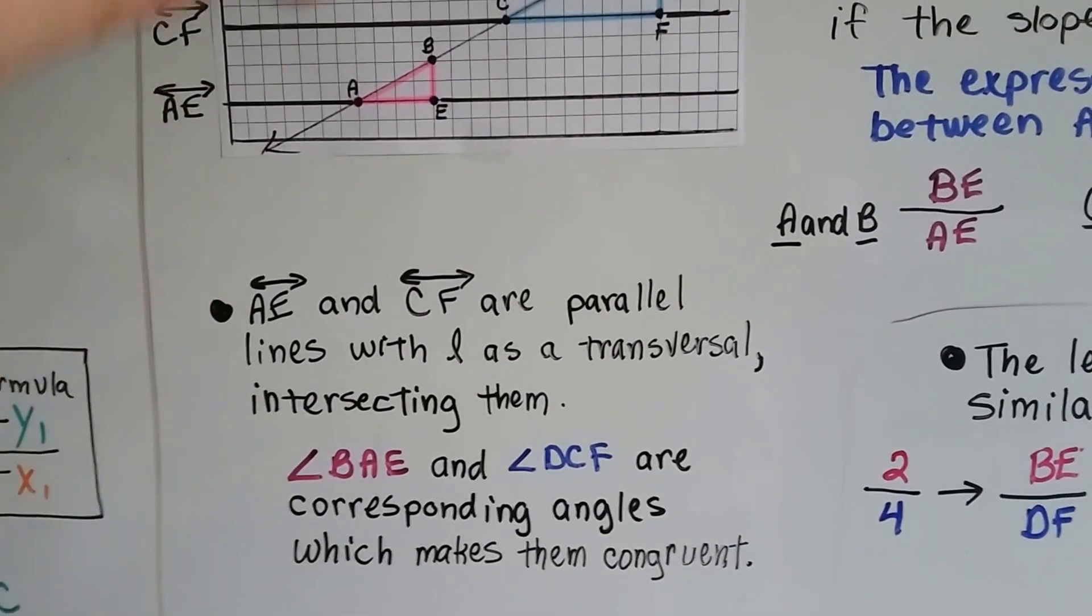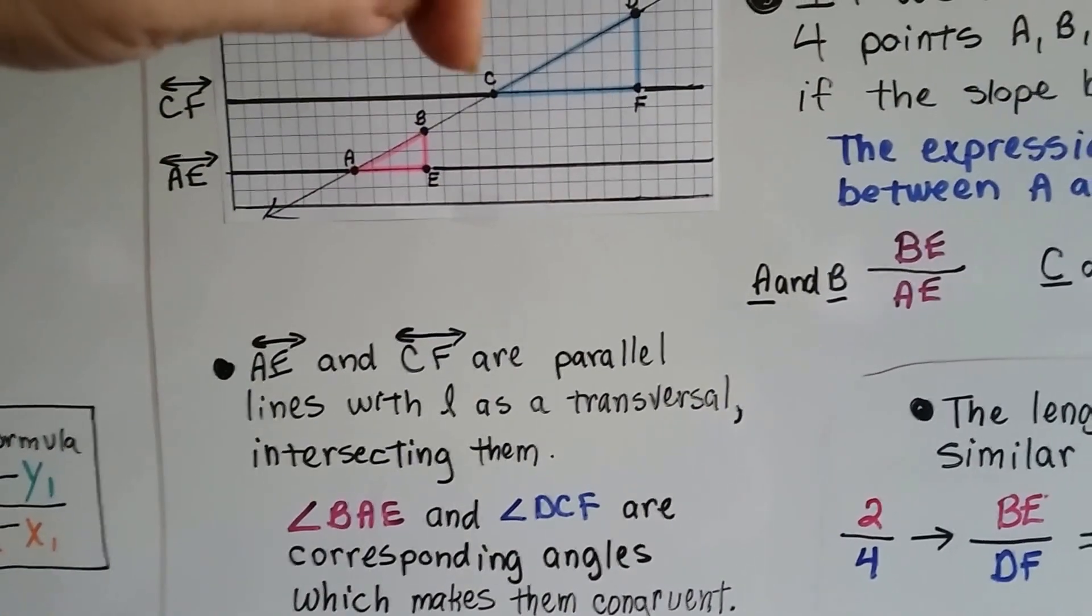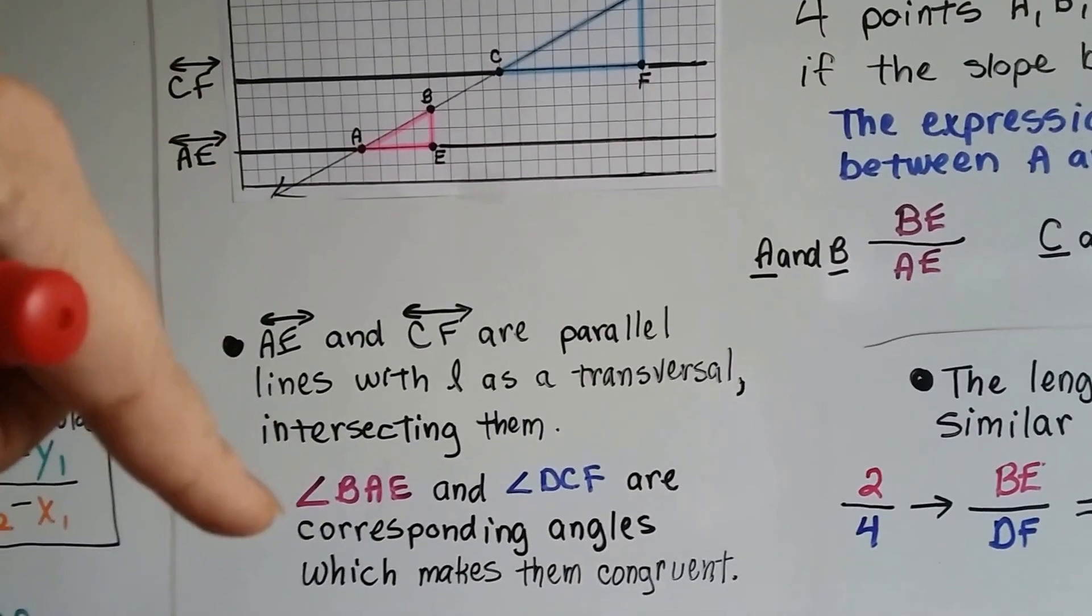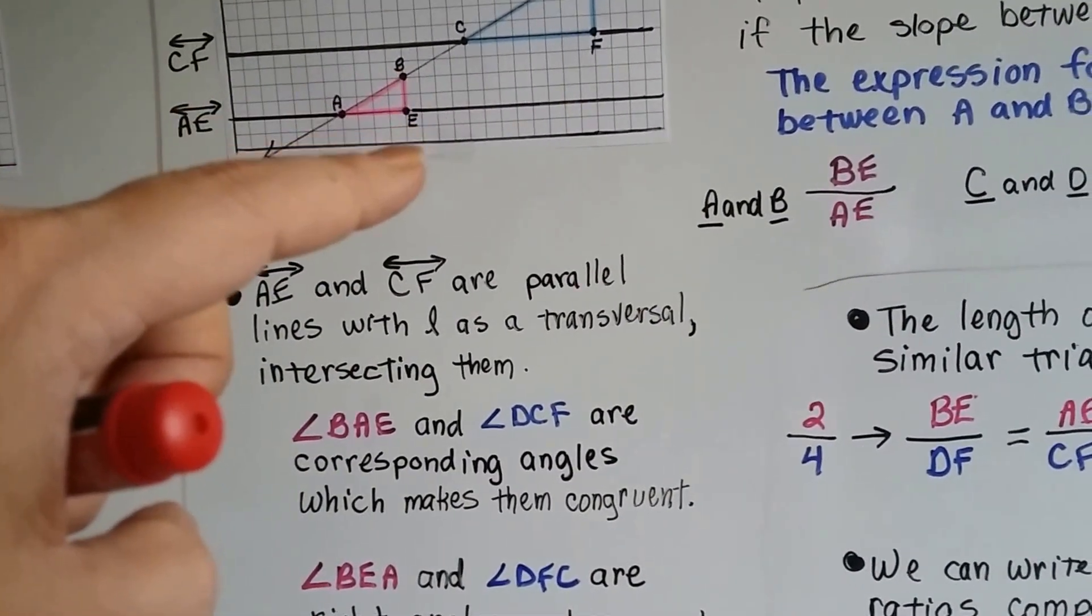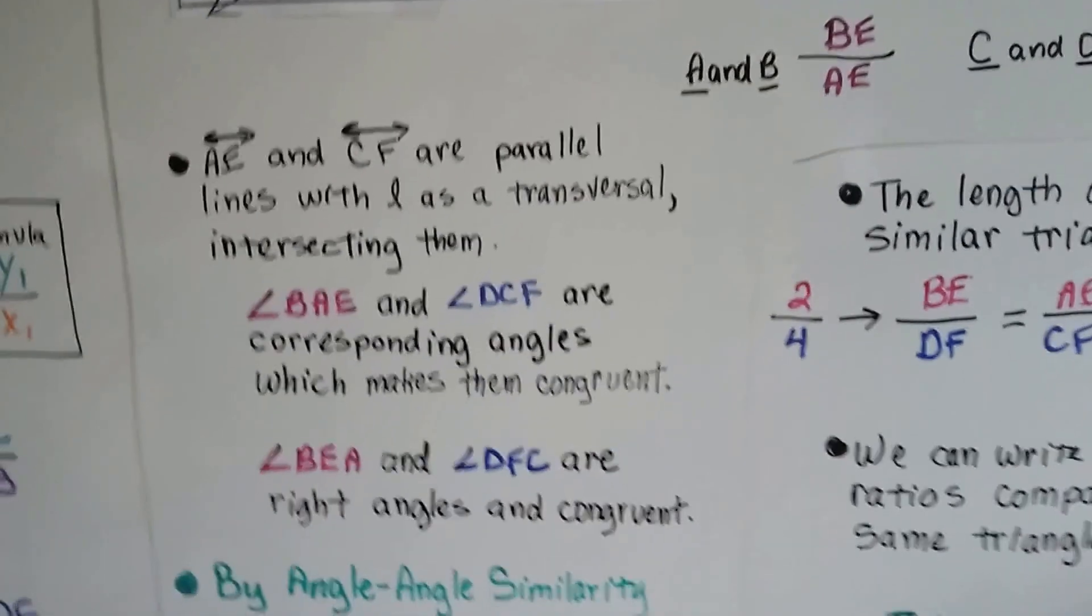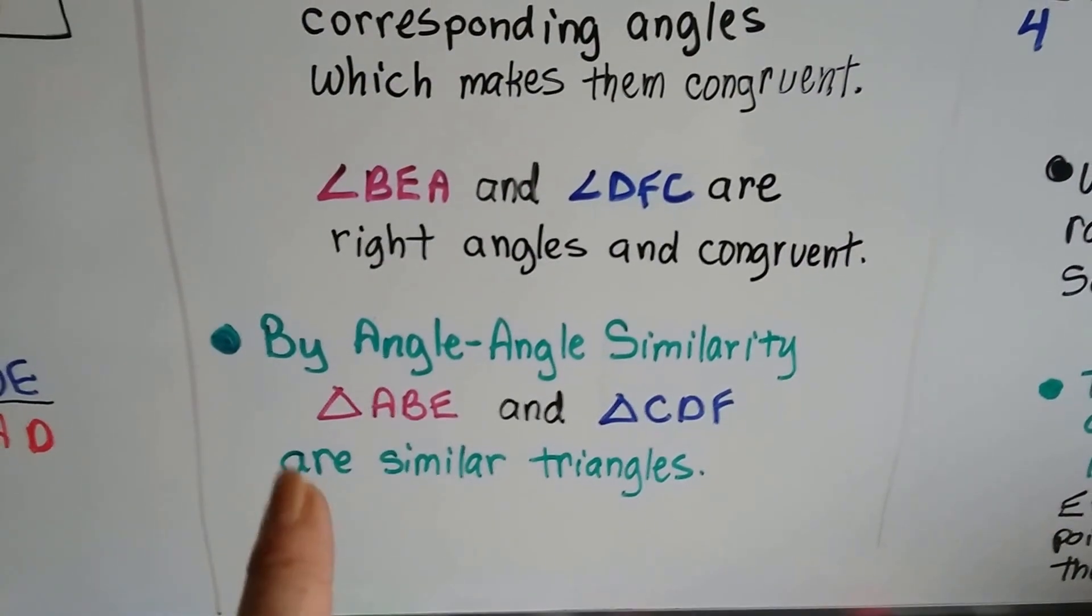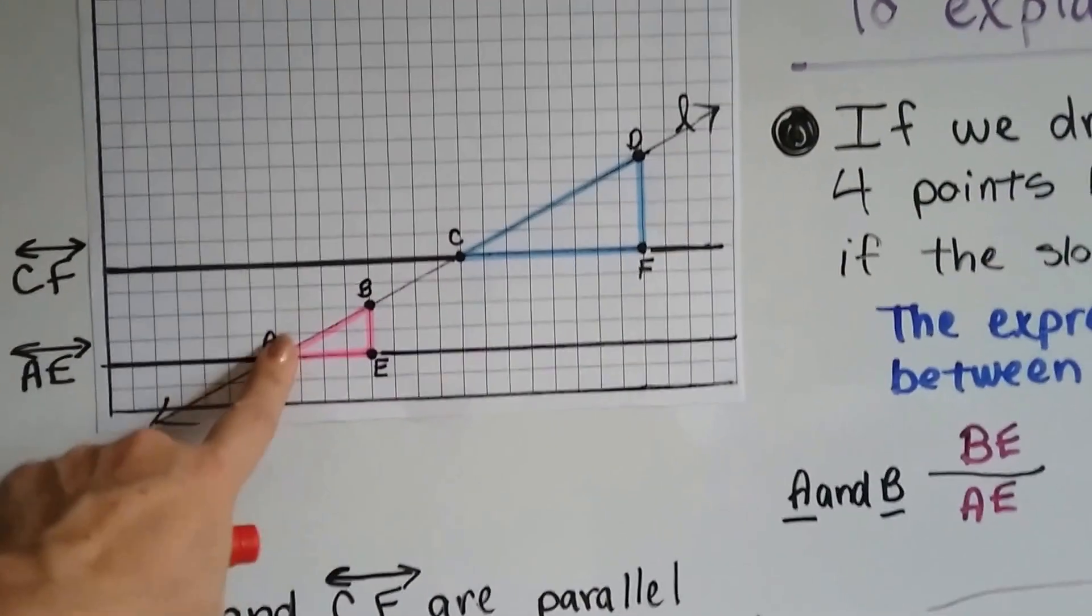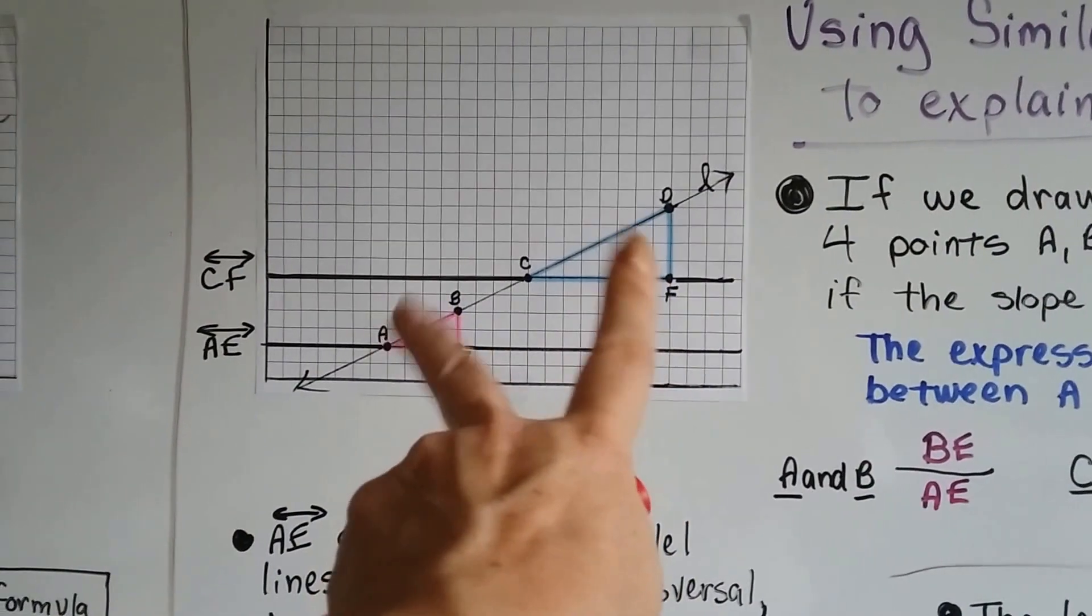So angle BAE, that would be this little angle right here, and angle DCF, that's this little angle here, these two angles for the pink and blue triangle, they're corresponding angles, which makes them congruent. So that means triangle ABE and triangle CDF are similar triangles. That means this little pink one and this blue one are similar, because they're in proportion and they have two angles that match.